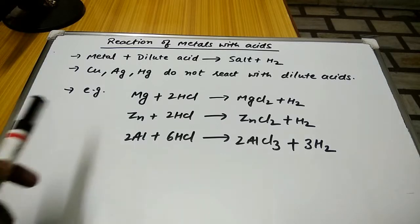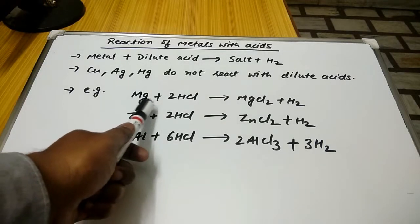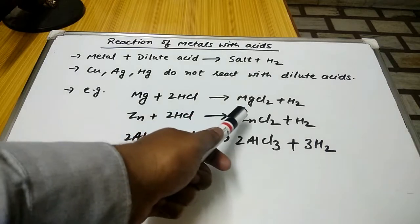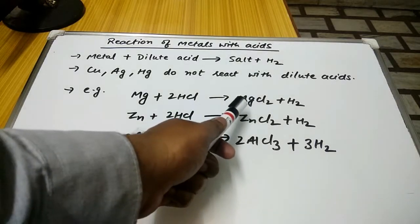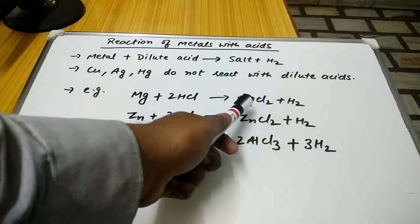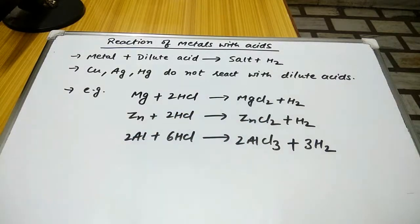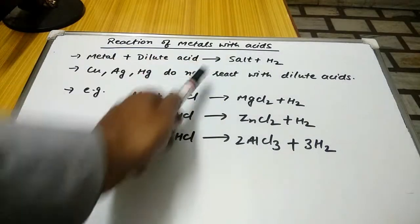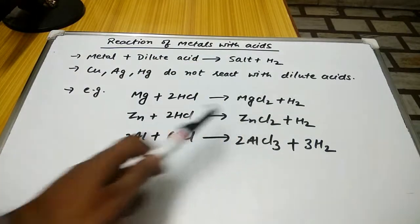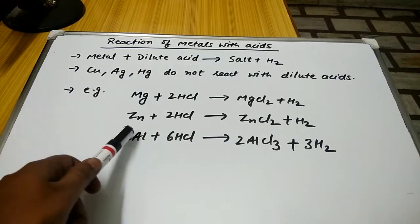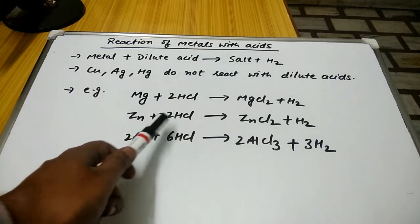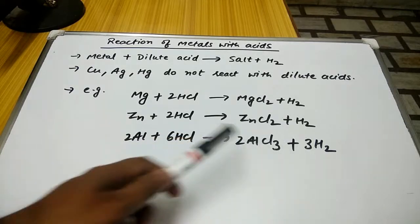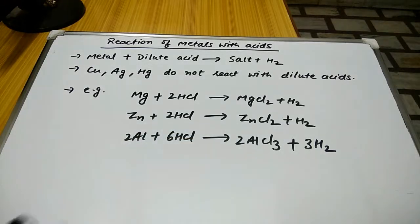For example, magnesium reacts to give magnesium chloride and hydrogen gas. Similarly, zinc reacts to give zinc chloride and hydrogen gas.